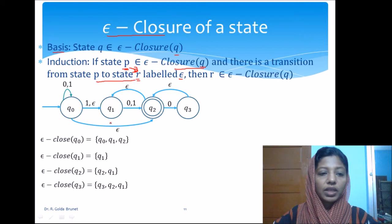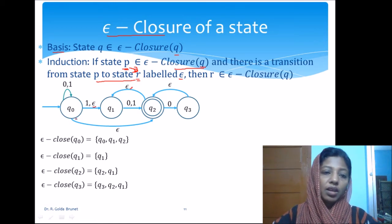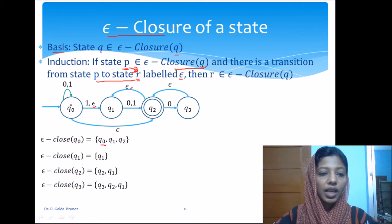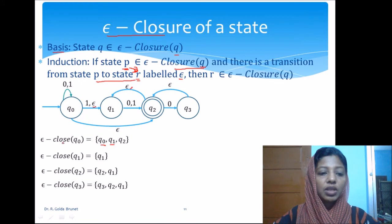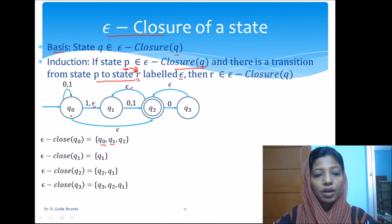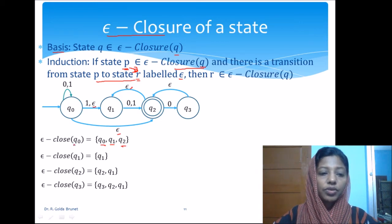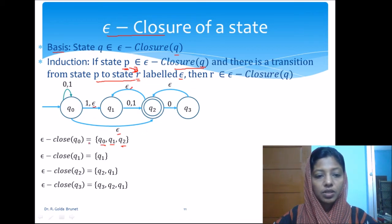Let us work out an example with an epsilon transition machine. The epsilon closure of q0 will include q0 using the basis. From q0 we can go to q1 using epsilon, so q1 will be in the epsilon closure of q0. From q0 using epsilon transition we can also go to q2, so q2 will also be in the epsilon closure of q0, and there are no other transitions possible.